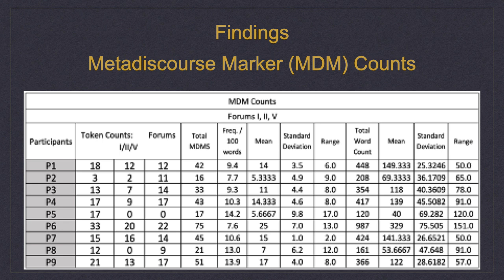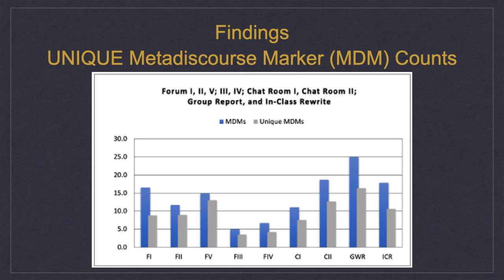As seen here for frame one, the frequency of metadiscourse marker use for each frame was calculated and normalized for every 100 words. I then gathered a count, normalized, of unique uses of MDMs, shown here in grey, along with the general MDM count in blue. Collecting a count for unique uses of MDMs was important as it distinguished repeated uses of, for example, 'so,' from the use of other markers which mean the same thing, such as 'therefore,' 'hence,' and 'for that reason.'